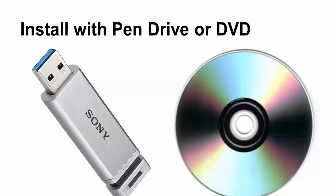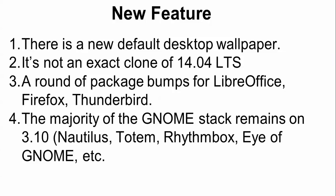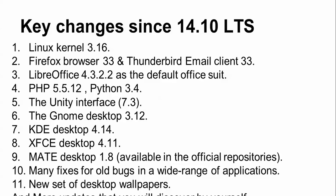You need to make a bootable pen drive, or else you can leave it to install directly. The features include the default desktop, Thunderbird update, Firefox 30 update. I will show you the details here: Thunderbird update, Firefox 30, LibreOffice as default, PHP 5.12, Python 3.4, Unity interface 7.3, KDE, and MATE 1.4.